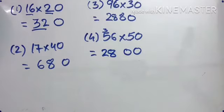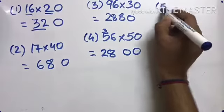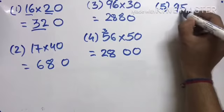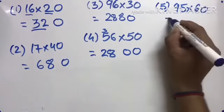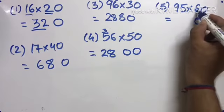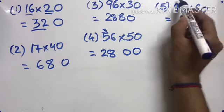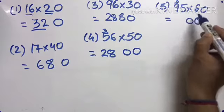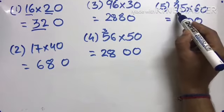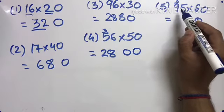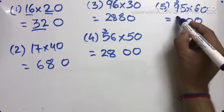A few more examples so we have a clear idea. 95 multiplied by 60. So one zero is already there. 6 times 5 is 30, write 0, carry 3. 6 times 9 is 54. 54 plus 3 is 57. 5700.